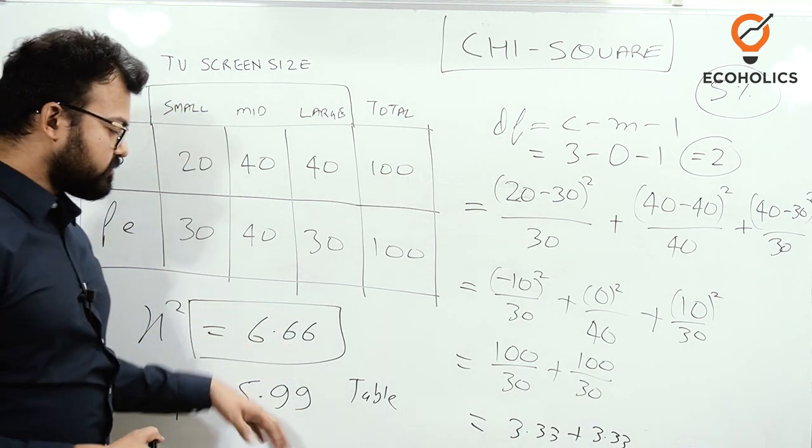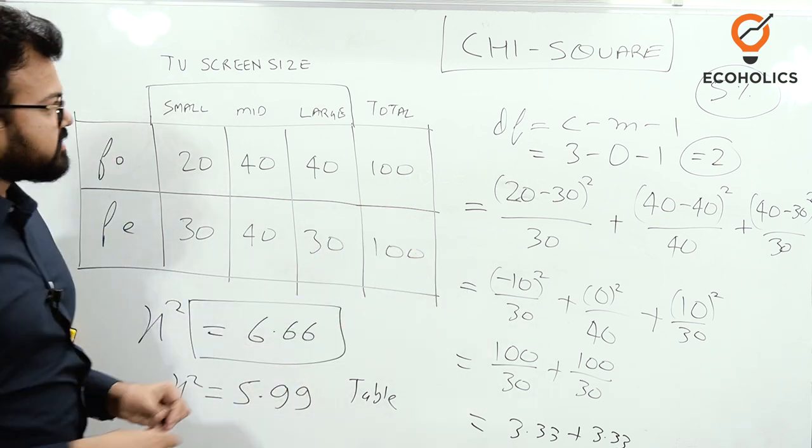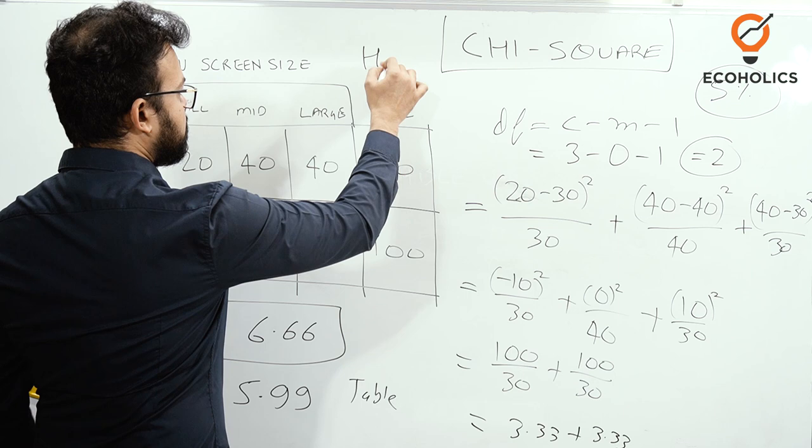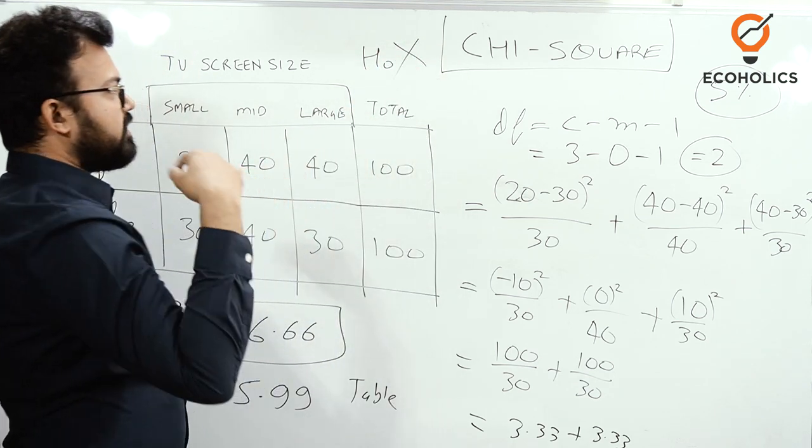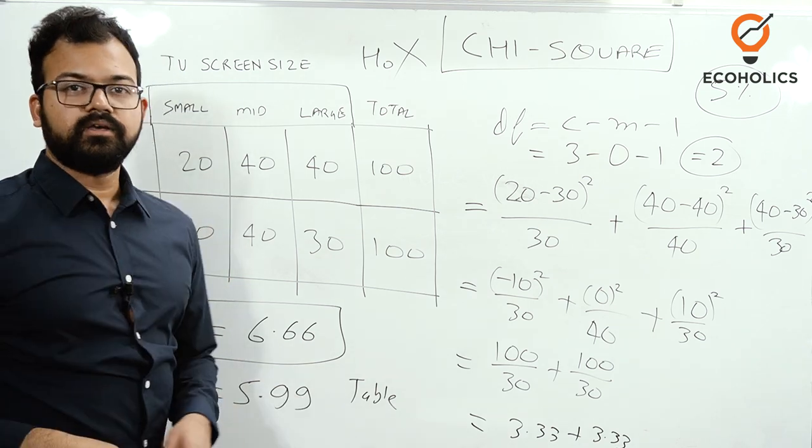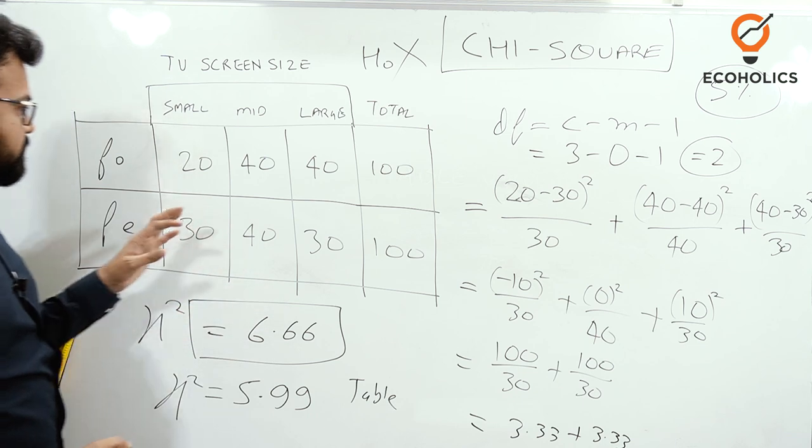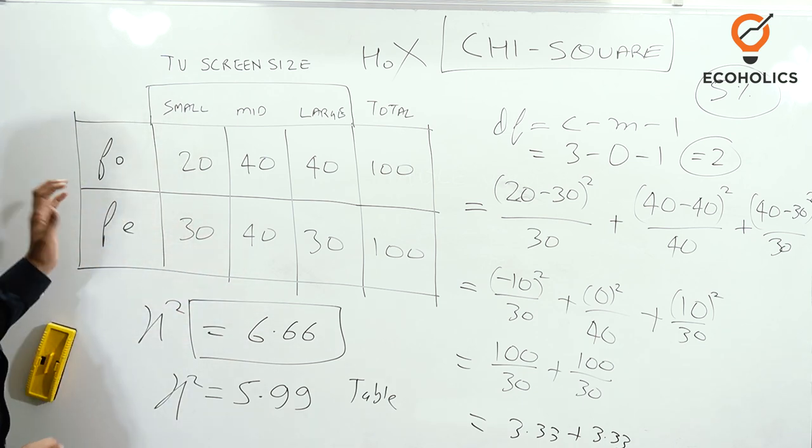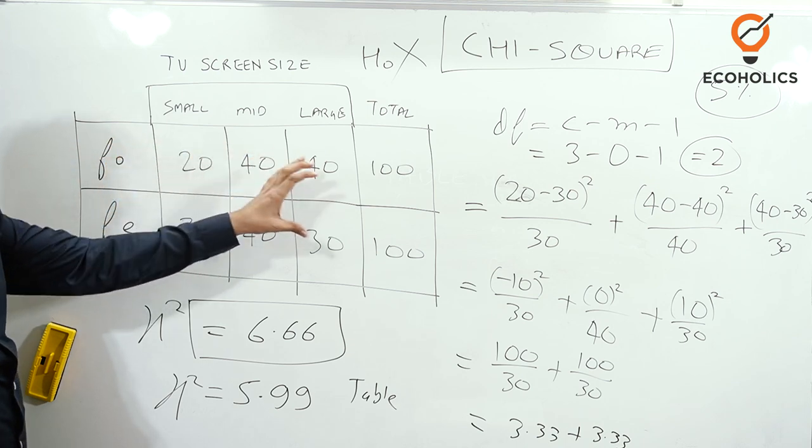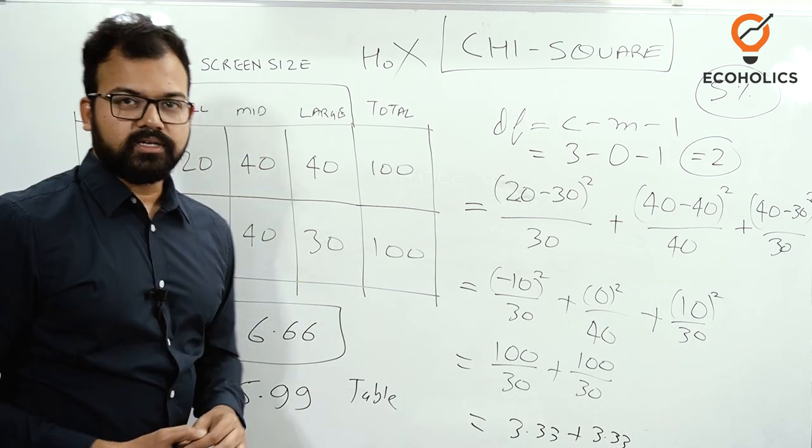As we discussed earlier, if the calculated value is more than the table value, it is beyond it, meaning we will reject the null hypothesis H₀. If we reject H₀, it means we automatically accept the alternative hypothesis H₁. What does it mean? The observed and expected frequencies are not equal, and the order that this TV showroom owner has done is not correct.